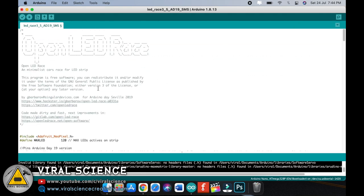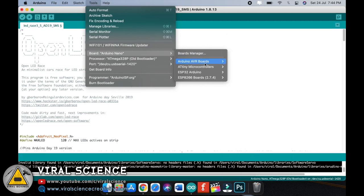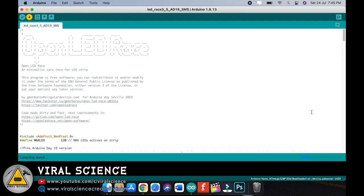After doing this, you just have to select the board, that is Arduino Nano. Select the processor old bootloader, select the port and upload the code.